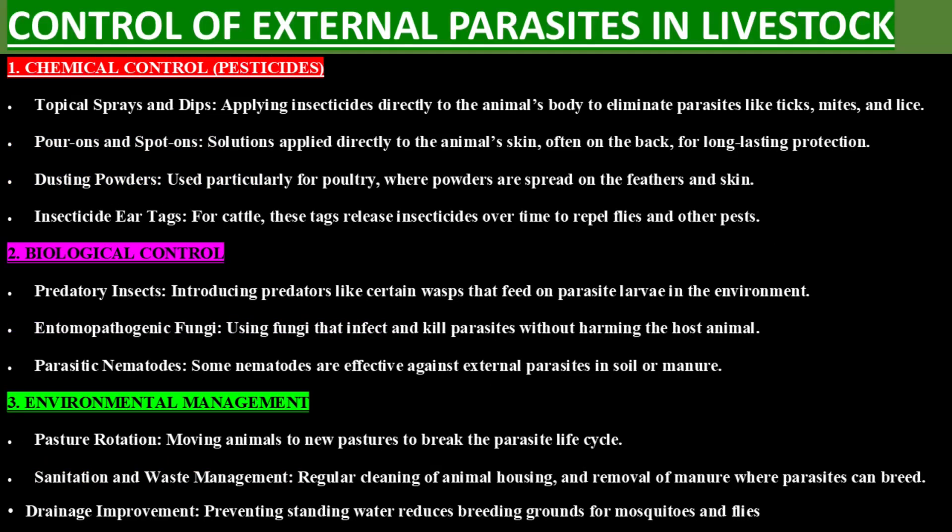Control of external parasites includes chemical control using pesticides: topical sprays and dips applying insecticides directly to the animal's body to eliminate parasites like ticks, mites, and lice; pour-ons and spot-ons, solutions applied directly to the animal's skin, often on the back, for long-lasting protection; dusting powders used particularly for poultry; and insecticide ear tags for cattle that release insecticides over time to repel flies and other pests. Biological control involves introducing predators like certain wasps that feed on parasite larvae, using entomopathogenic fungi that infect and kill parasites without harming the host animal, and parasitic nematodes effective against external parasites in soil or manure.